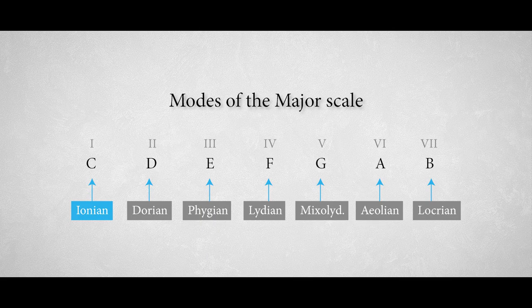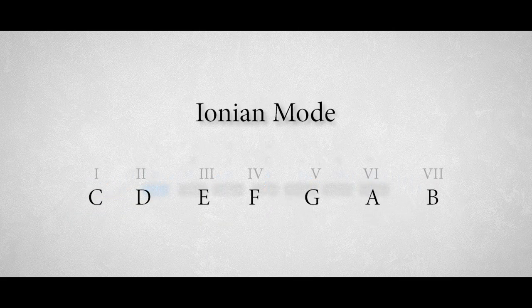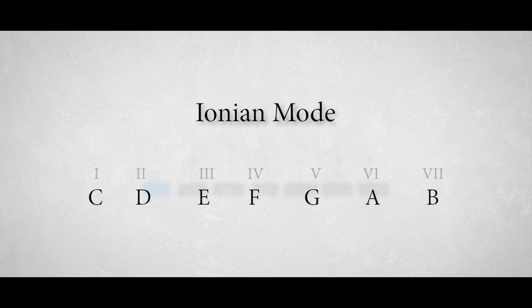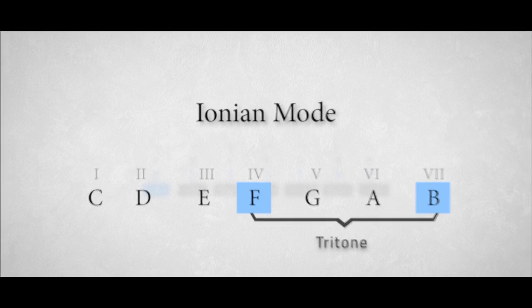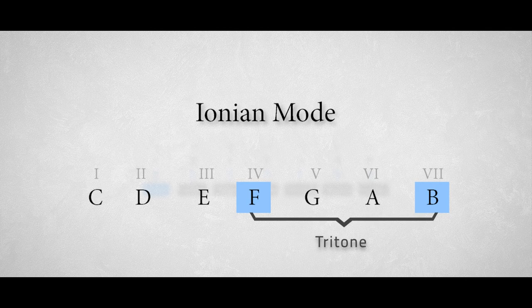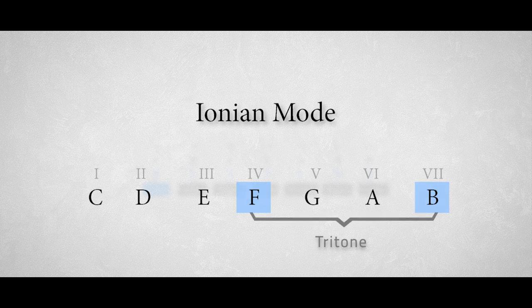The Ionian mode. The characteristic note in the Ionian mode is hard to tell, because this mode is the source of all other modes. If we have to pick a characteristic note it would be the combination of the perfect fourth and the major seventh. By the way the interval created by the fourth and the seventh degree, the F and B, is a tritone. In every mode the tritone contains the characteristic note, as I explained in part one.